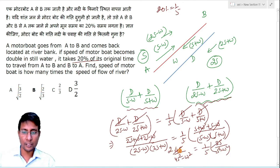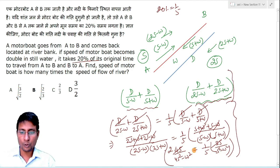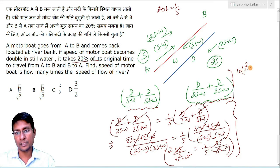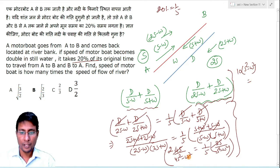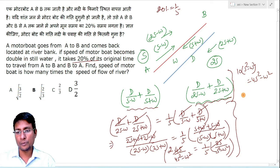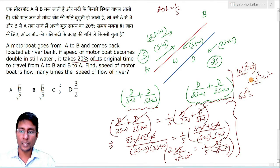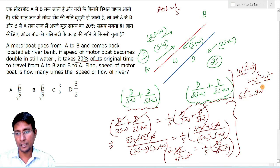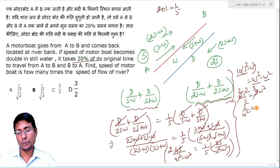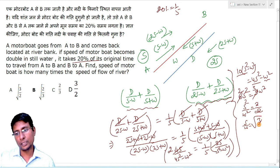Cancel 2S from both sides. Cross-multiplying gives 5 × 2 × (S²−W²) = 4S²−W² ... expanding: 10S²−10W² = 4S²−W². Rearranging: 6S² = 9W², so S²/W² = 3/2, and therefore S/W = √(3/2).